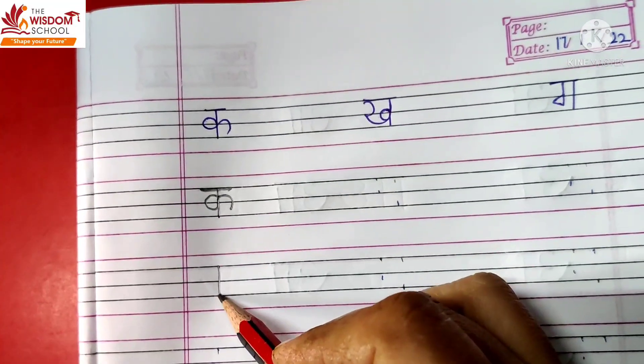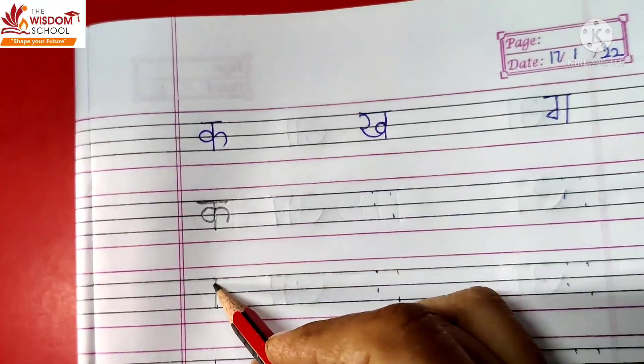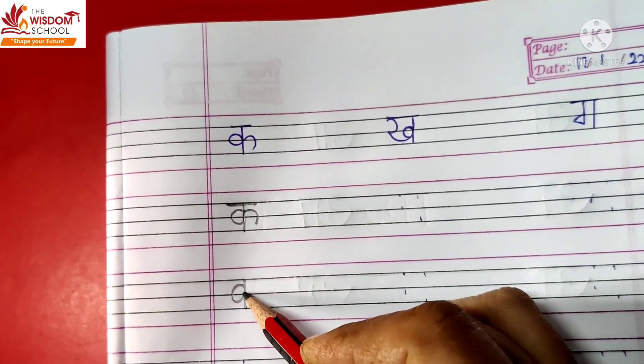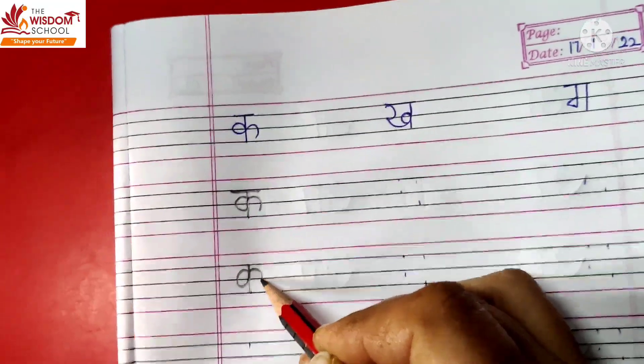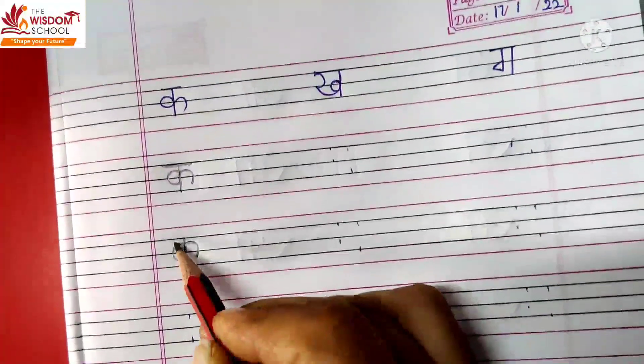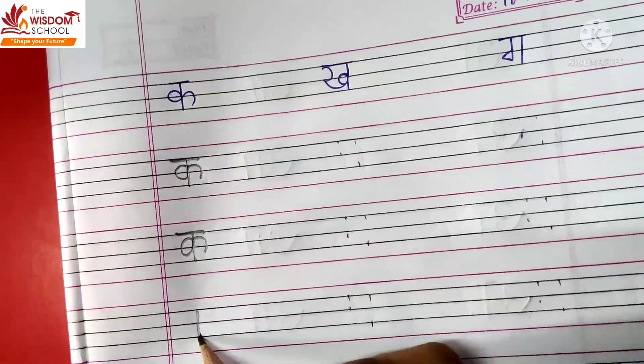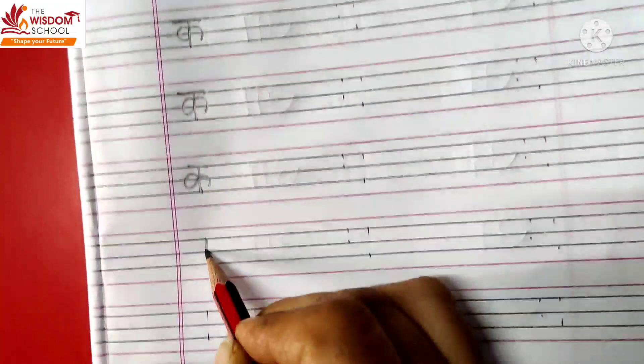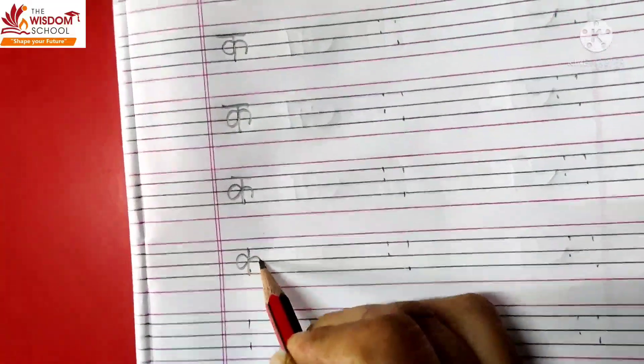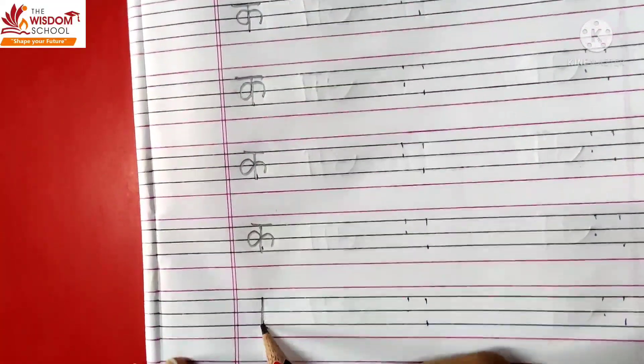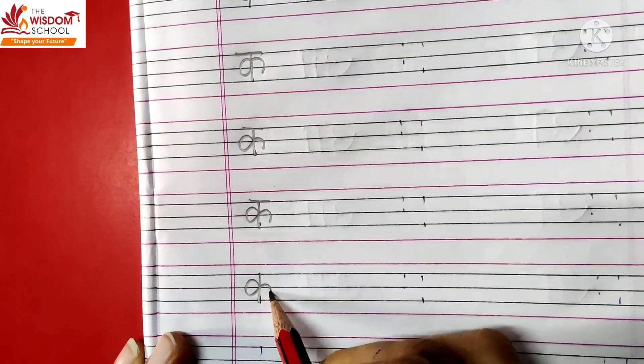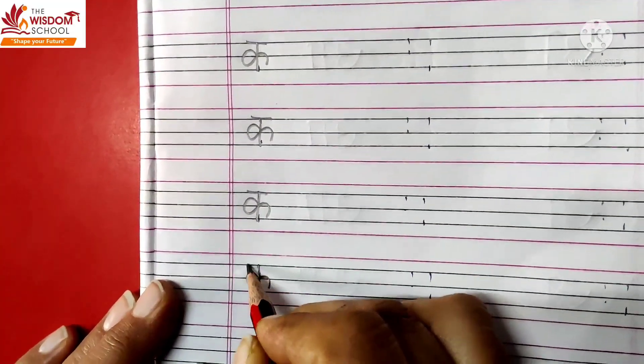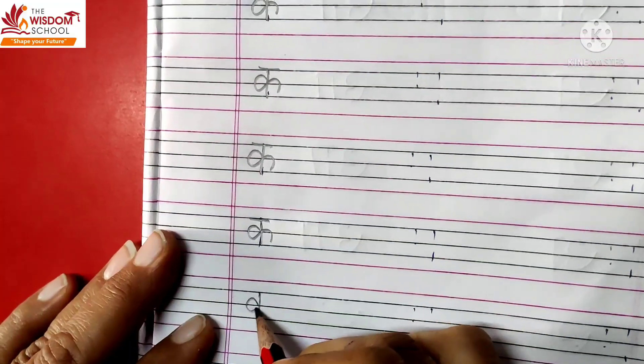Ka is standing line. We started here. There's a curve, then over it and touch it in the middle of this line. Then, it will be a sleeping line. Ka, ka bootar. Ka, ka bootar. Ka, kela. Ka.